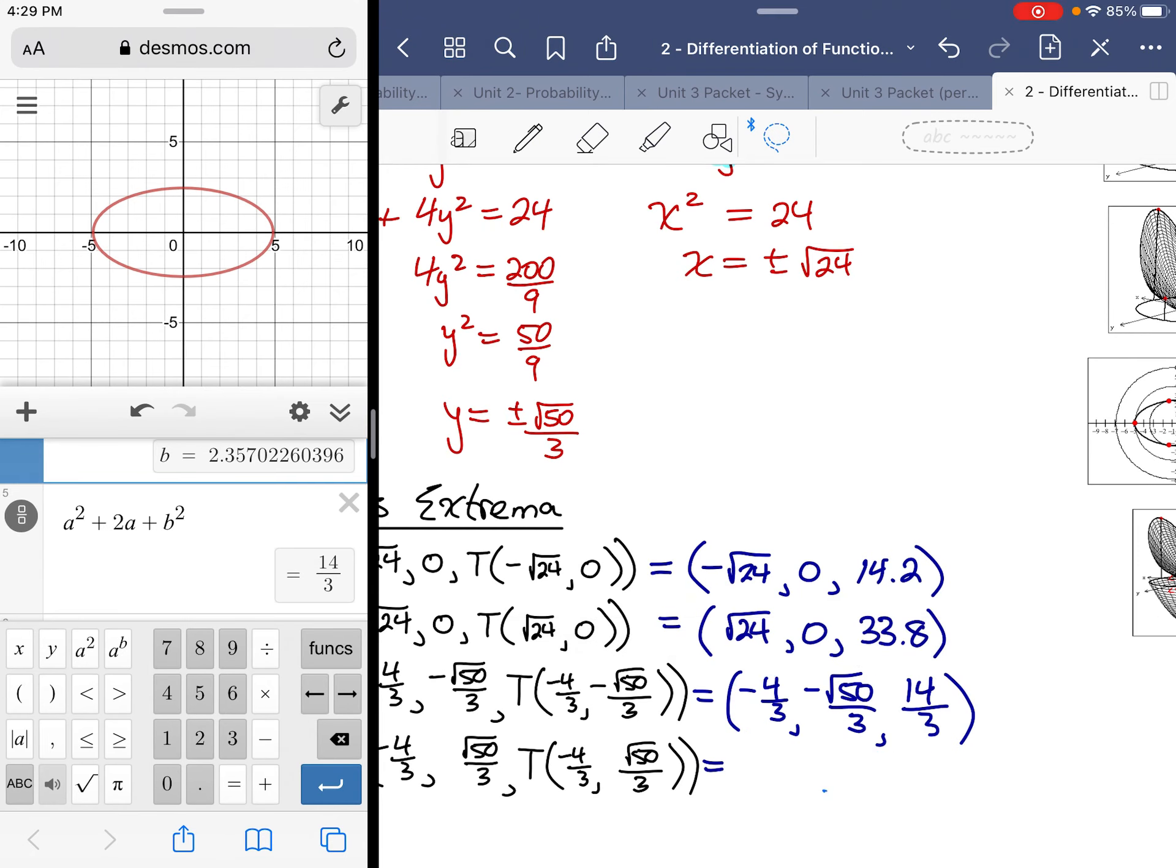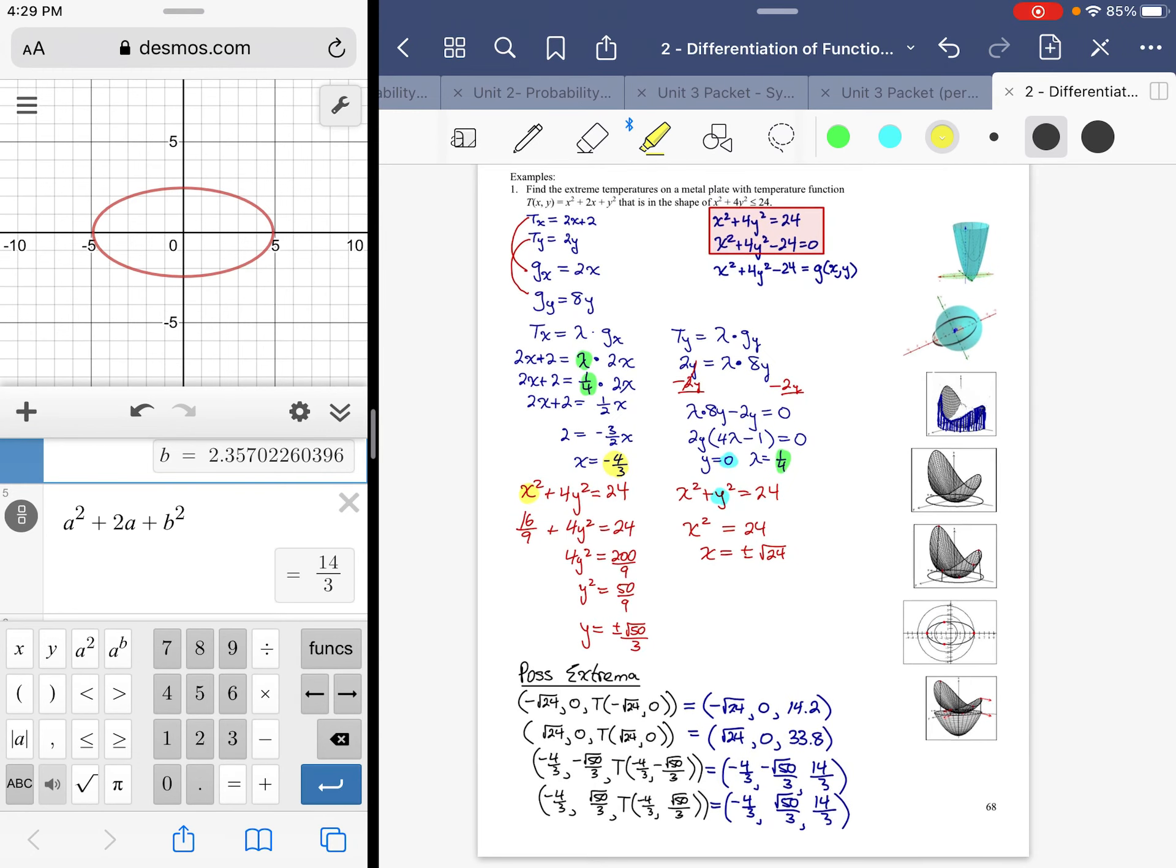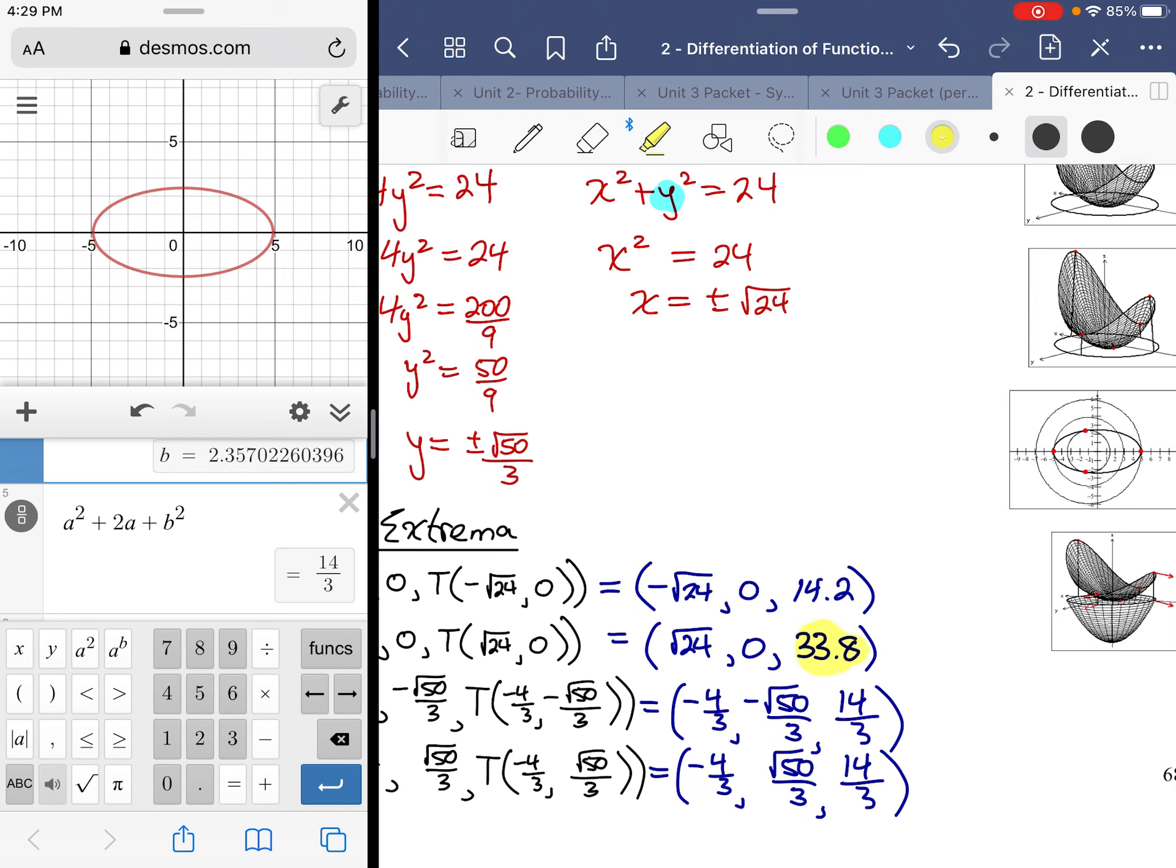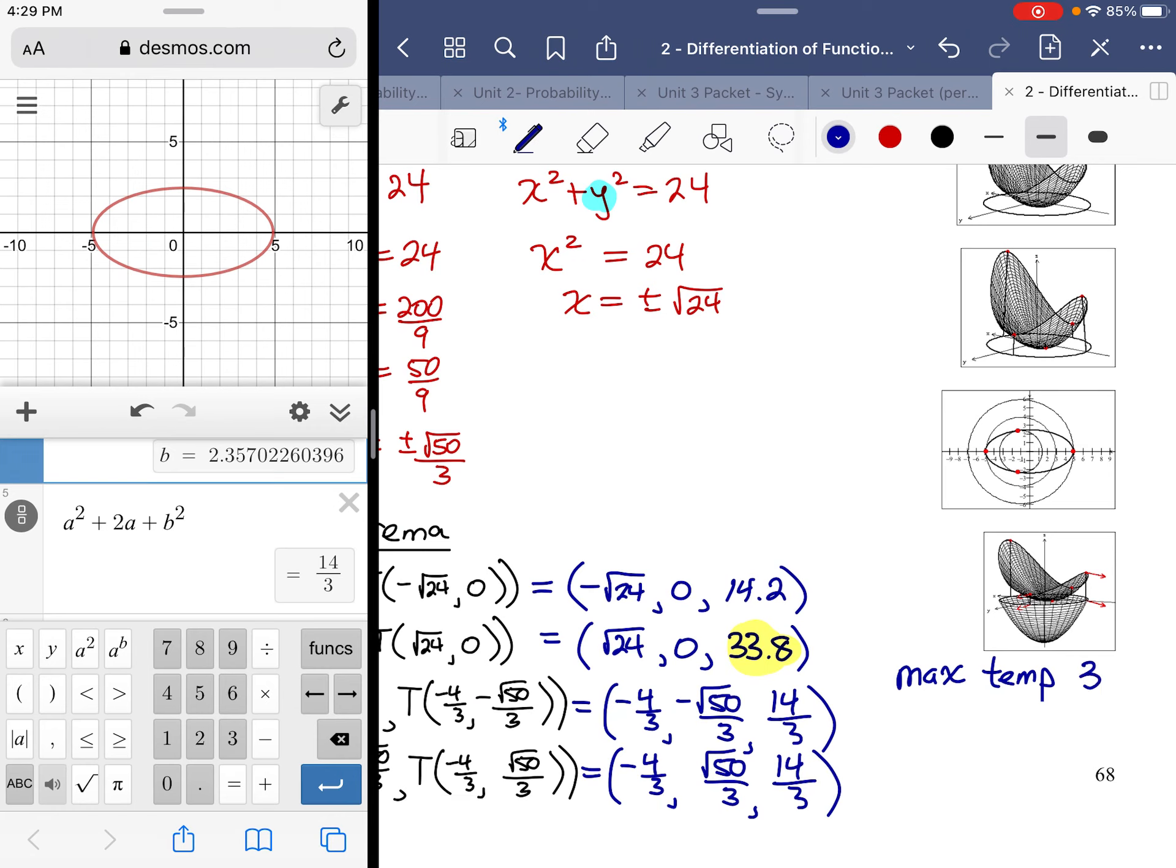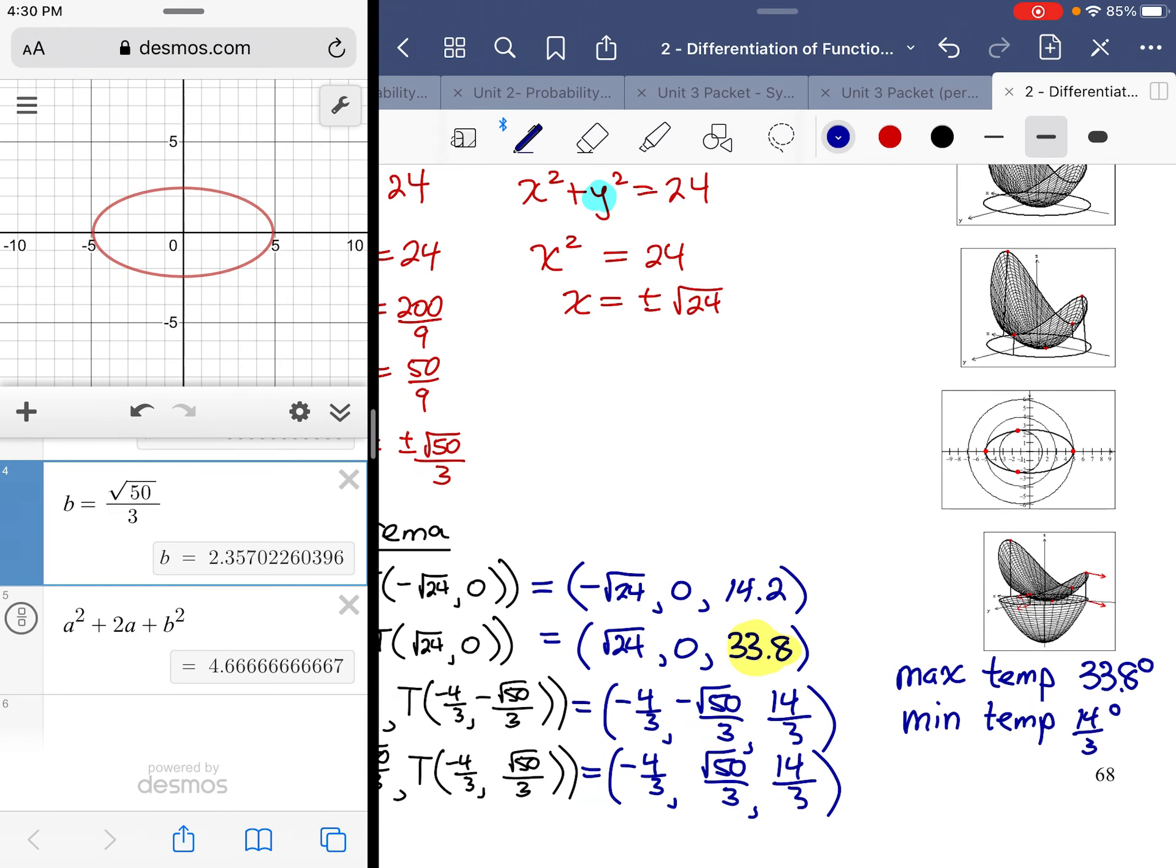The highest value would be the absolute maximum, and we're looking for extreme temperatures. So this is the max temp: 33.8 degrees. Min temperature: 14/3 or about 4.7 degrees.